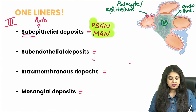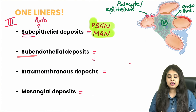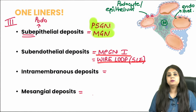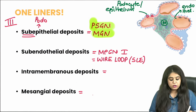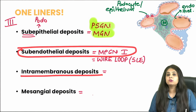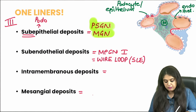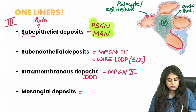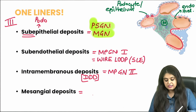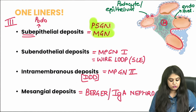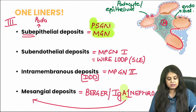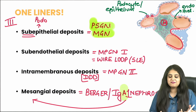Subendothelial deposits — below the endothelial lining — correspond to MPGN type 1 and the wire loop lesions characteristically seen in SLE. Intramembranous (within the basement membrane) corresponds to MPGN type 2, also known as dense deposit disease. Finally, mesangial deposits — in the middle — correspond to Berger's nephropathy, also known as IgA nephropathy, because IgA1 is deposited in the mesangium.